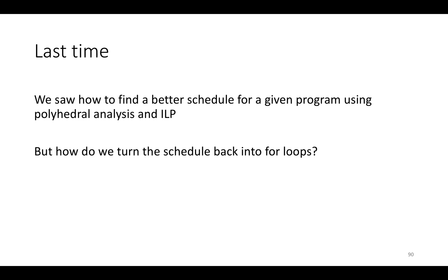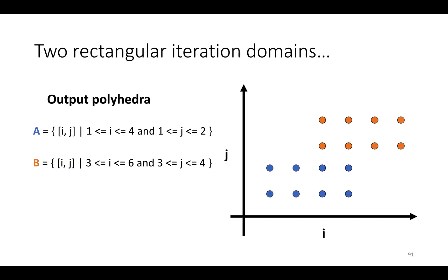We can think of the mapping from the original statements in the program to times in the new schedule as a mapping from one polyhedra, or group of polyhedra — one per statement — to another. So once we've applied the new schedule to the program, we've got a new set of polyhedra that represent the new execution order of the program, and we've got to emit code that traverses the polyhedra in lexicographic order.